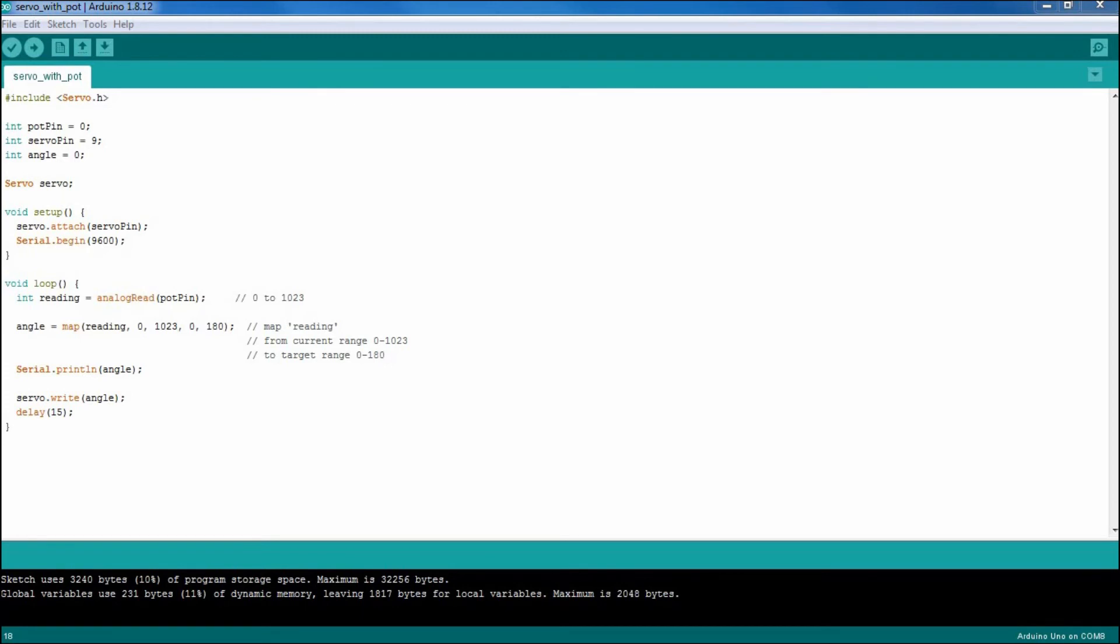This is the sketch. In setup, let's attach to pin D9 and start the serial monitor. In loop, let's read the value coming from the potentiometer. This value will be of range 0 to 1023. Let's map it to the target range of 0 to 180 degrees. Send it over to the servo motor using the write method. Let's upload the sketch and see how well it works.